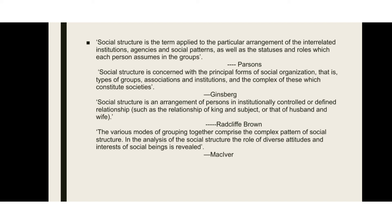According to Radcliffe Brown: 'Social structure is an arrangement of persons in institutionally controlled or defined relationships, such as the relationship of king and subject, or that of husband and wife.' This refers to controlled and defined relationships as the key arrangement.